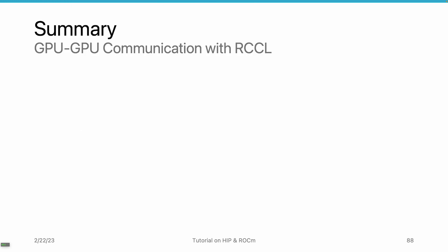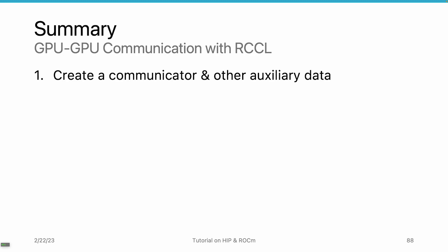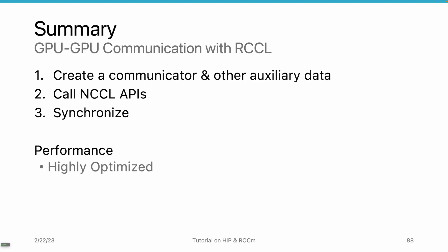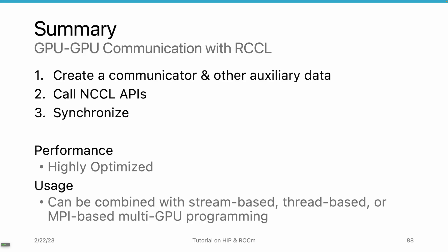As a summary, the RCCL library is very easy to use and can be combined with the MPI library. The steps to use RCCL are: create a communicator and other auxiliary data structures, call the NCCL APIs, and finally synchronize because it is a non-blocking API call. Its performance is highly optimized for a wide range of hardware configurations, and you can combine RCCL with stream-based, thread-based, or MPI-based multi-GPU programming.